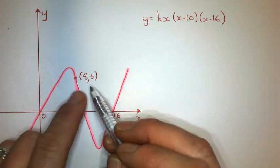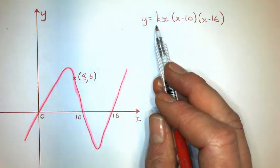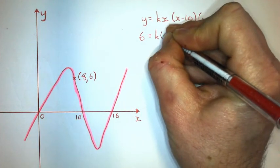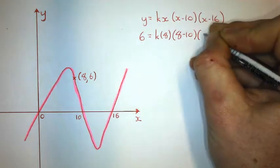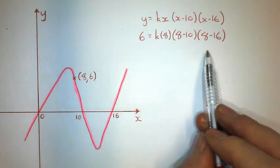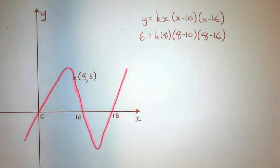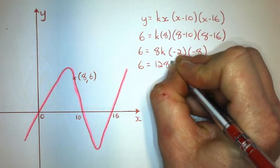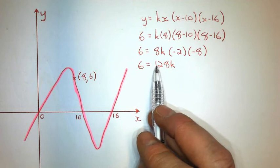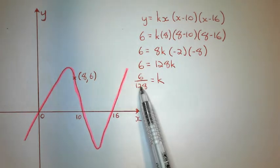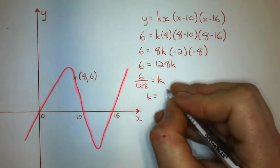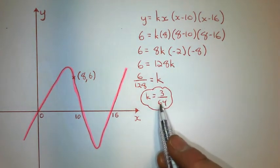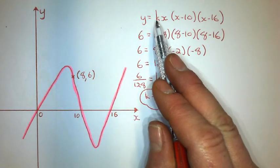I substitute that other given point in for x and y and solve for k. Multiplying the number parts together on the right side gives me 128. Dividing to isolate k, I simplify the fraction to get 3/64, rather than a big decimal, since the fraction is more accurate. I substitute that back in for k and I've got the equation.